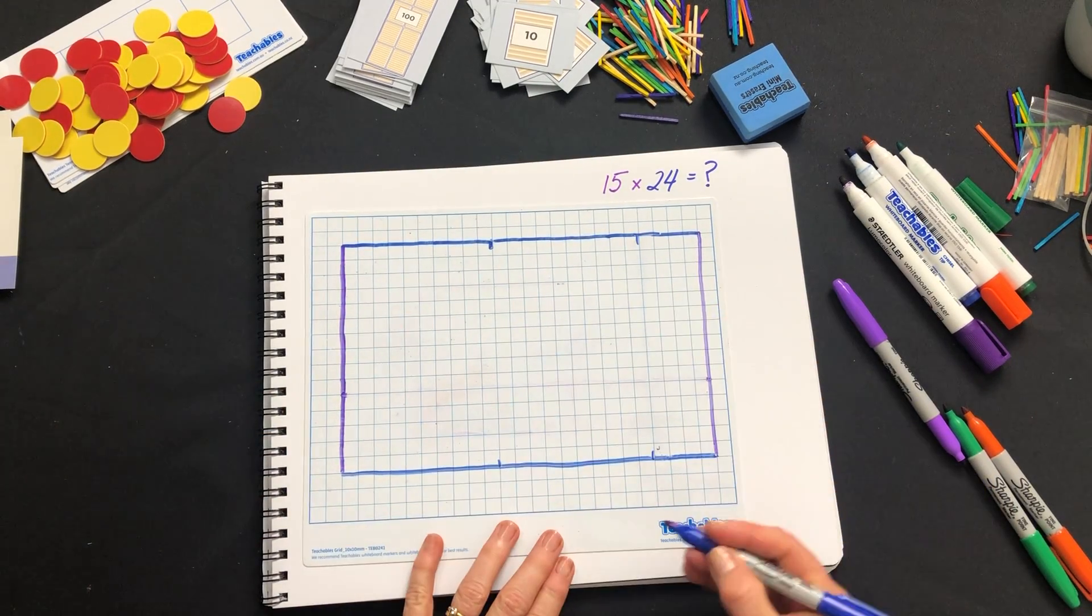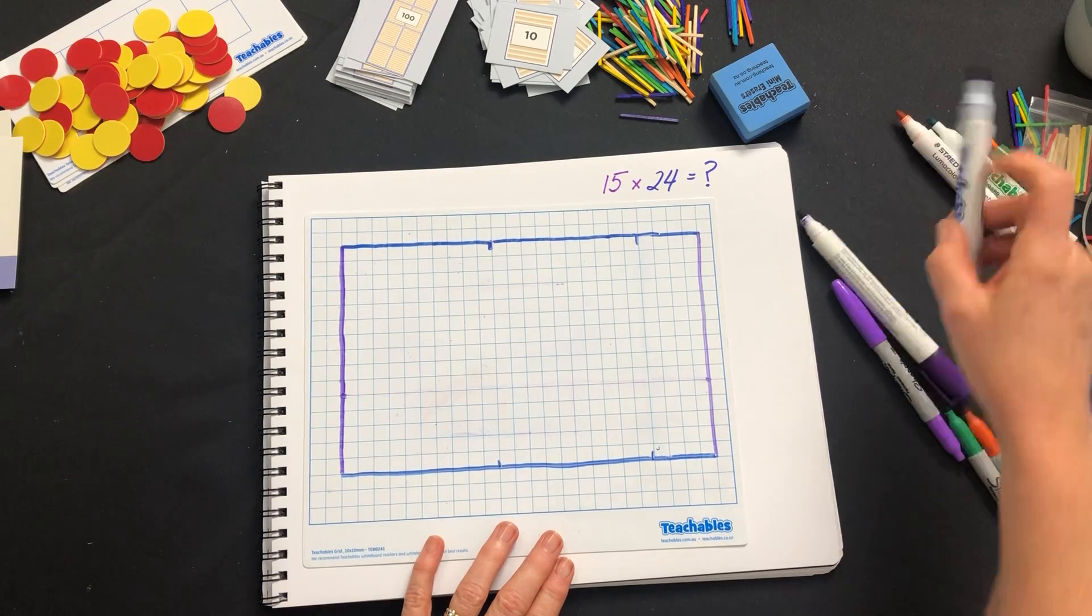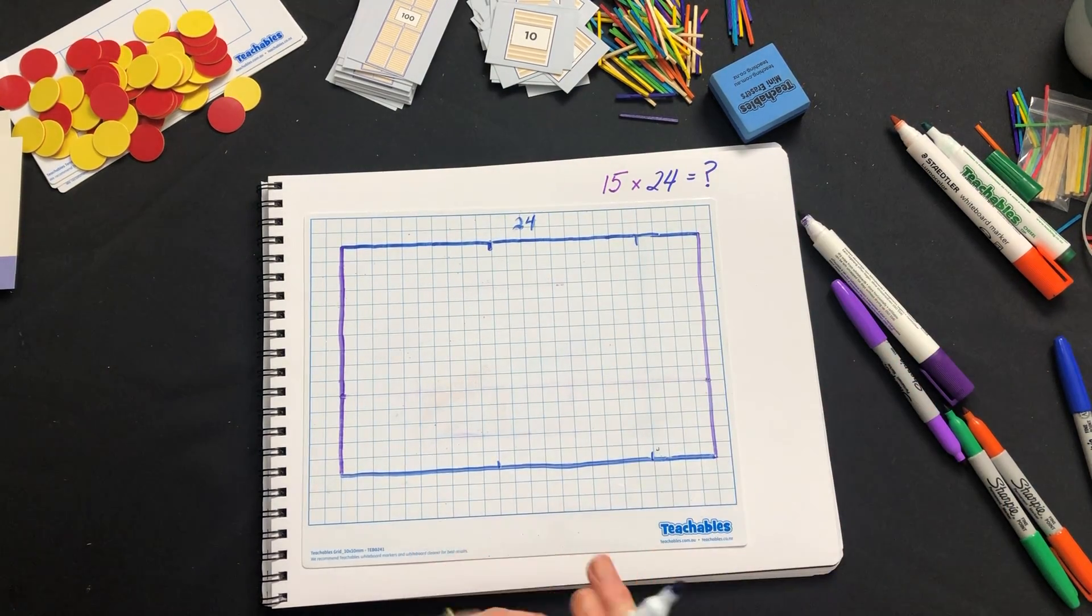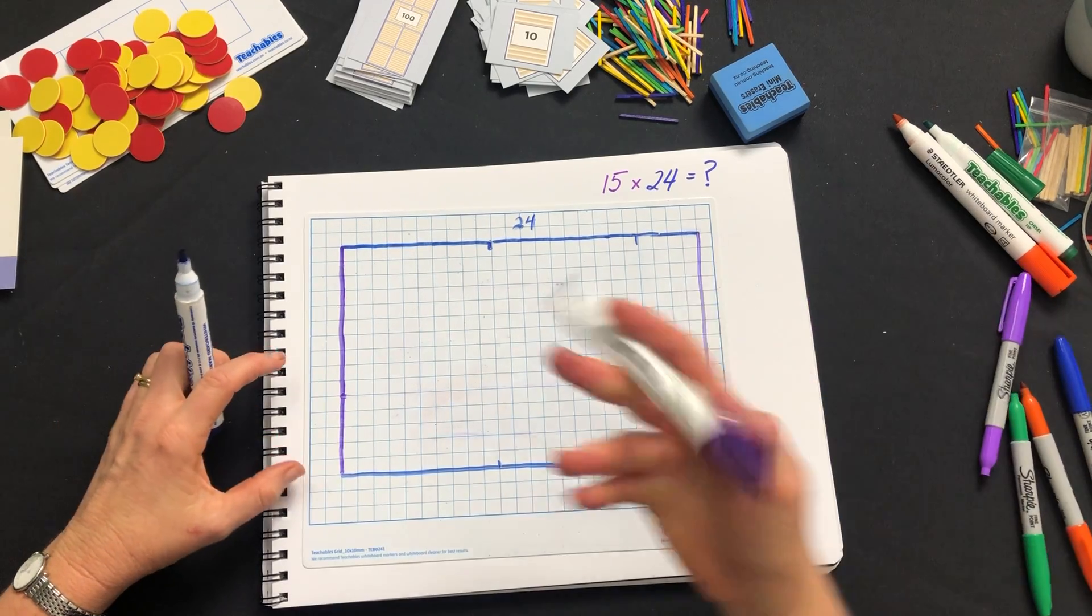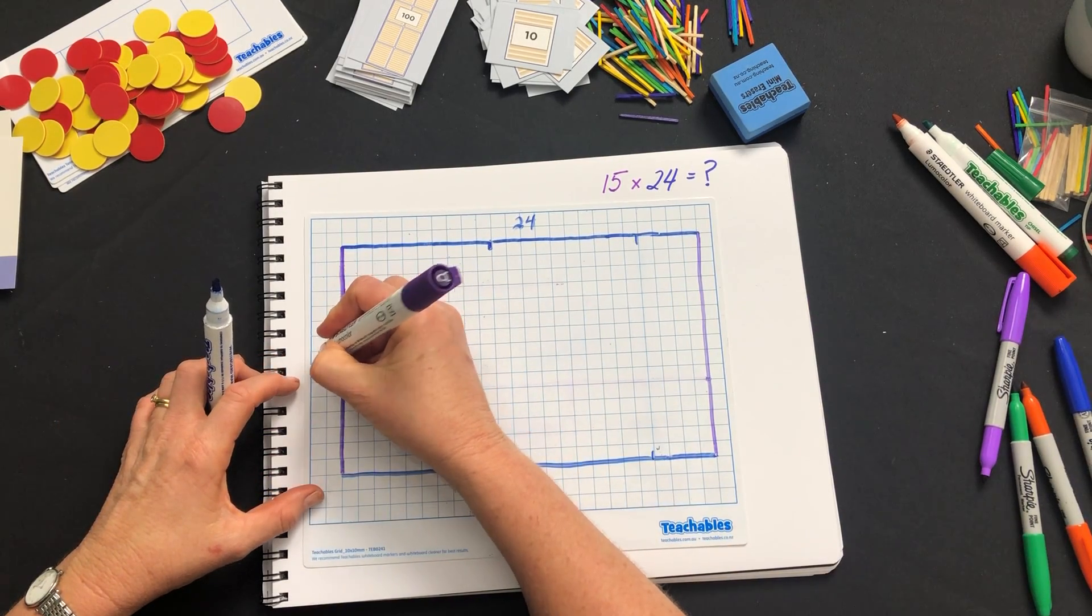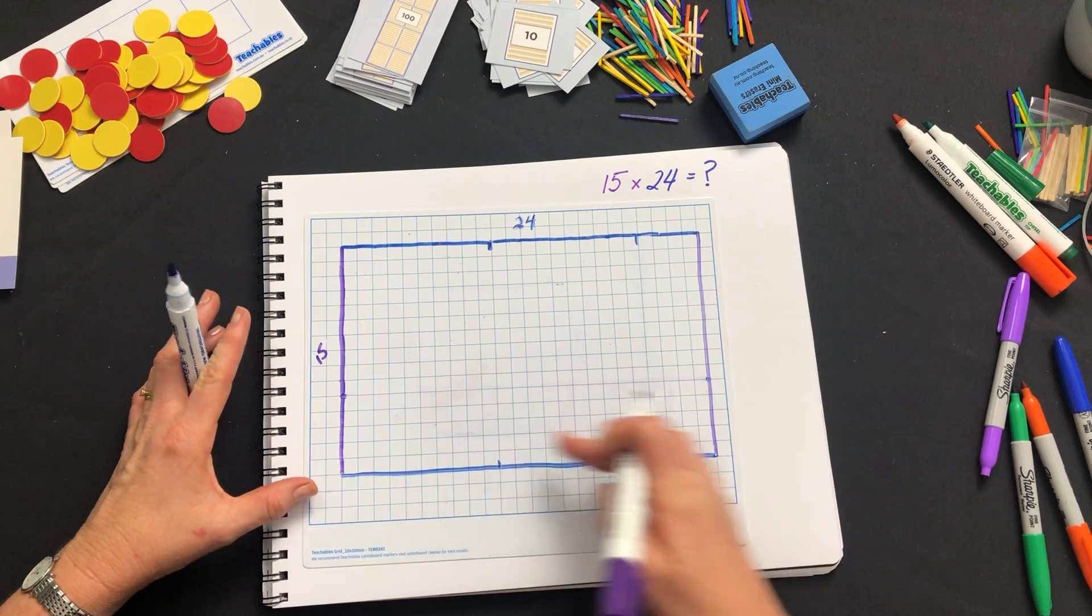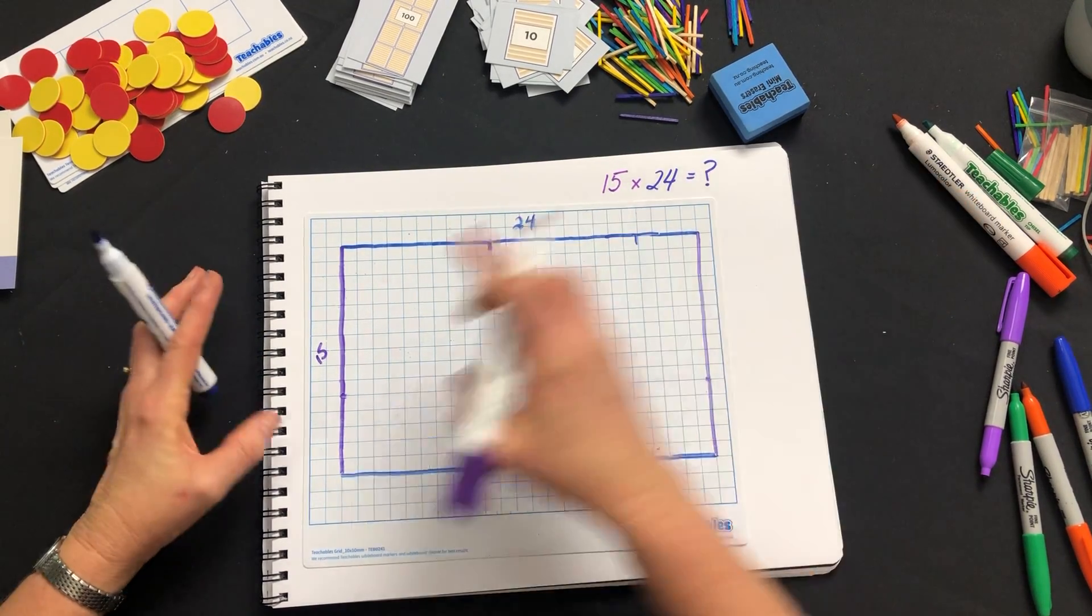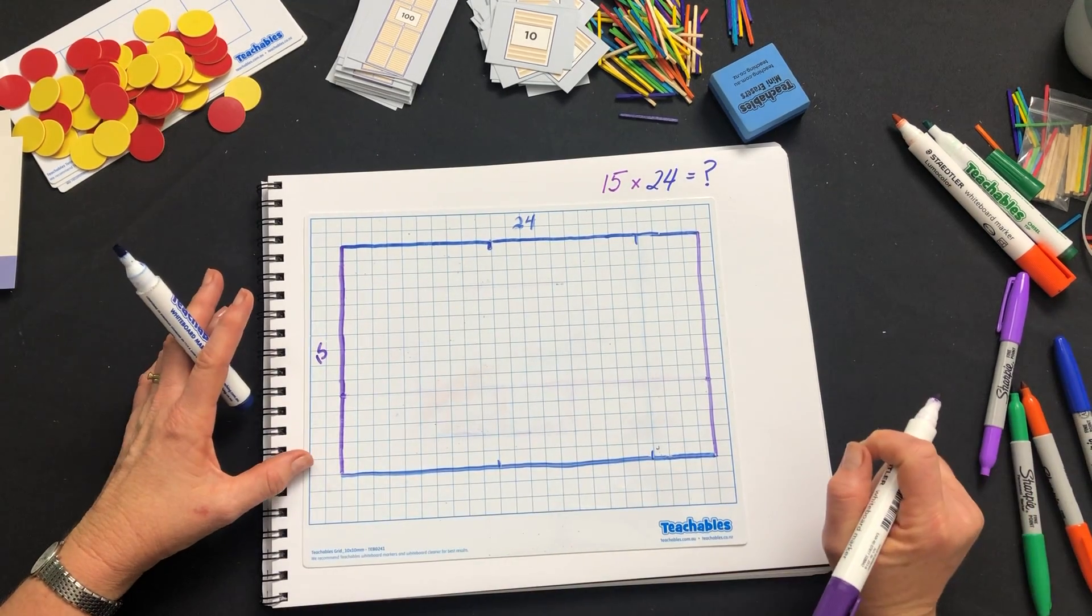If we look at this rectangle on the whiteboard we've gone 24 squares across and 15 down, and the number of squares inside that rectangle is the answer to our problem. 15 rows of 24.